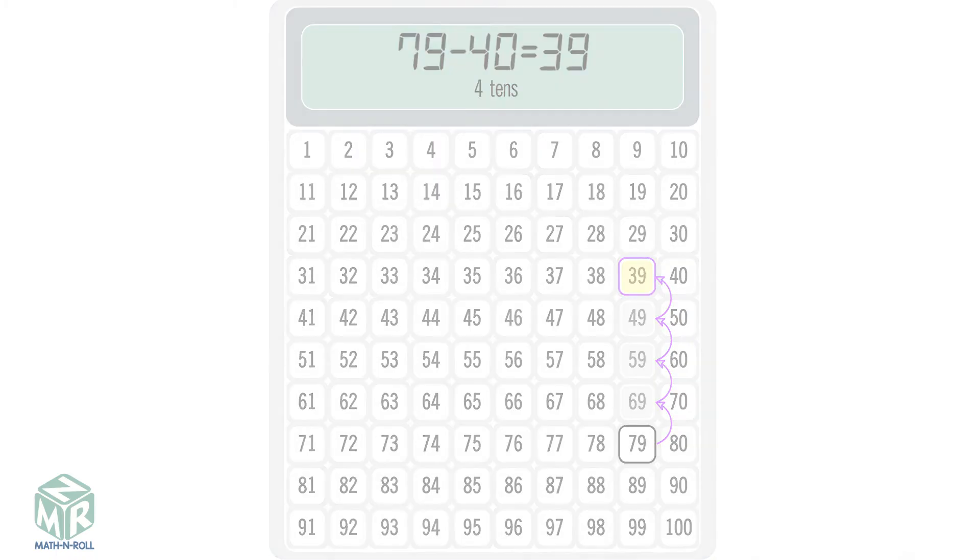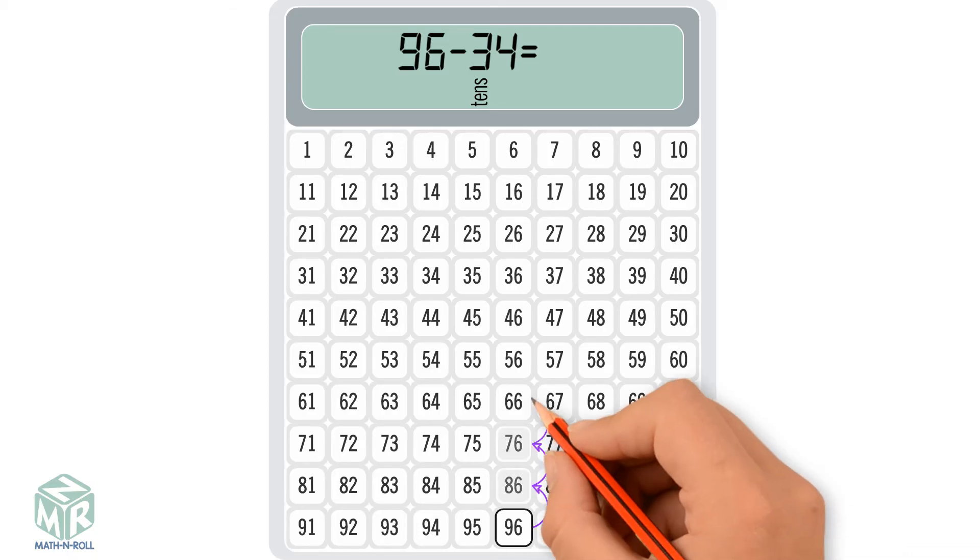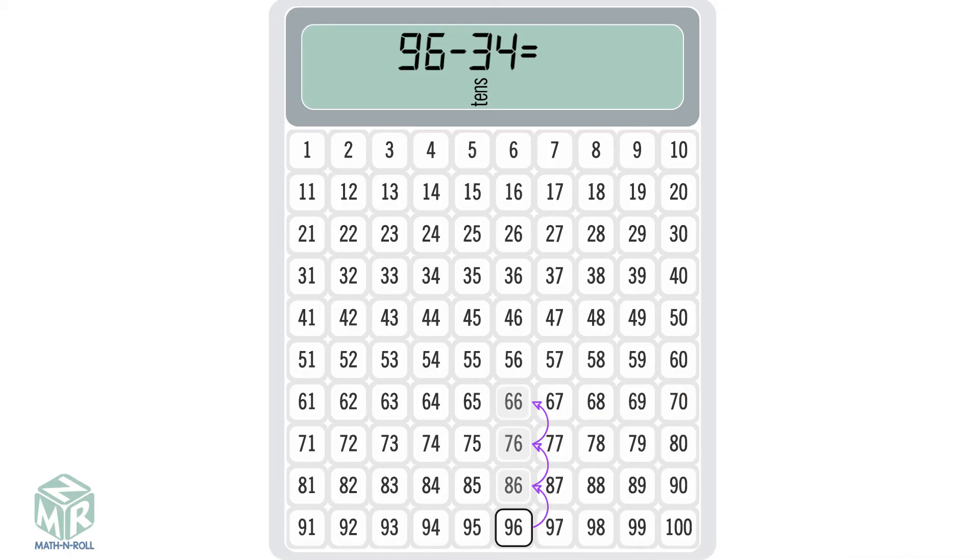Let's try another example, 96 minus 34. 34 has 3 tens. Start at 96 and move up, or subtract 3 tens. We pause at 66.